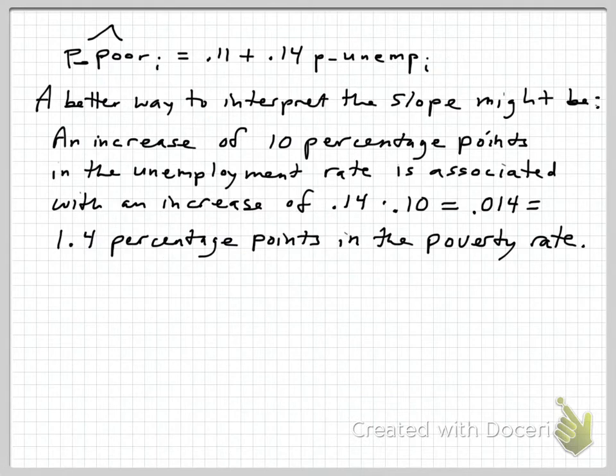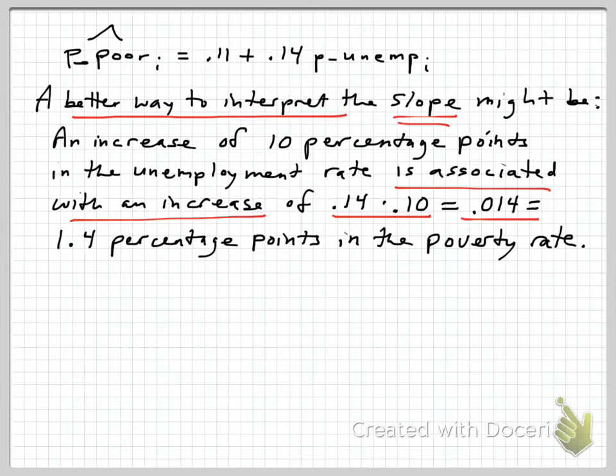So here's one way to think about it. Again, reiterating the equation, the estimated regression equation that I was just referring to. So a better way to interpret this regression, in particular that slope of 0.14, might be to consider a kind of simple thought experiment. An increase of 10 percentage points, say unemployment rate going from 10% up to 20% across counties, an increase of 10 percentage points in the unemployment rate here is associated with an increase in the proportion poor of 0.14 times that change in the unemployment proportion. So that was 0.10 if it's 10 percentage points, and that comes out to be 0.014 or 1.4 percentage points in the poverty rate. So again, an increase of 10 percentage points in the unemployment rate associated with an increase of 1.4 percentage points in the predicted poverty rate in this regression.